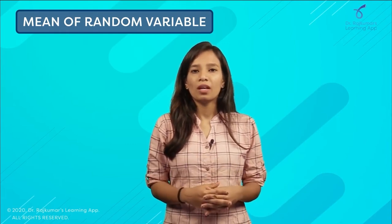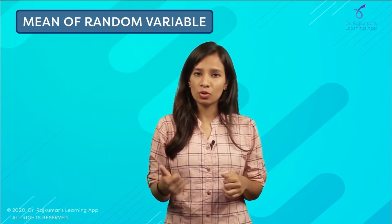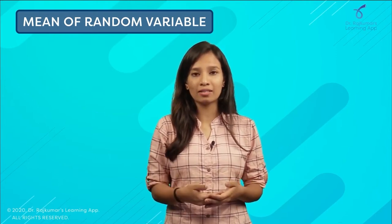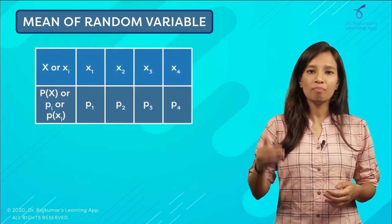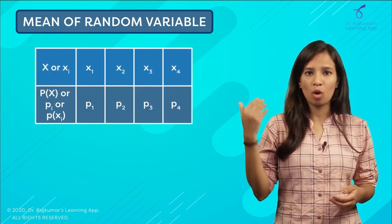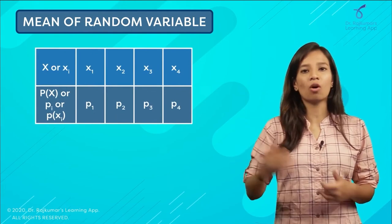If you look at our probability distribution chart that we have already discussed, we have our x values in one place and then P(x), the probability of this x, in another column. This is our distribution.